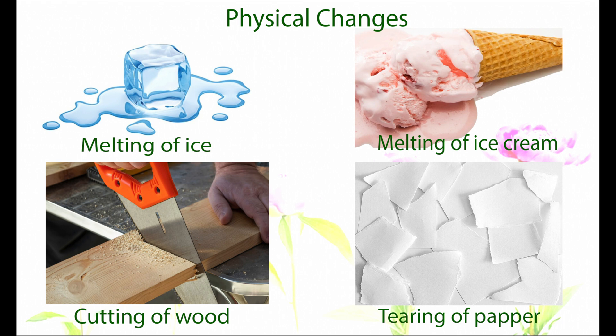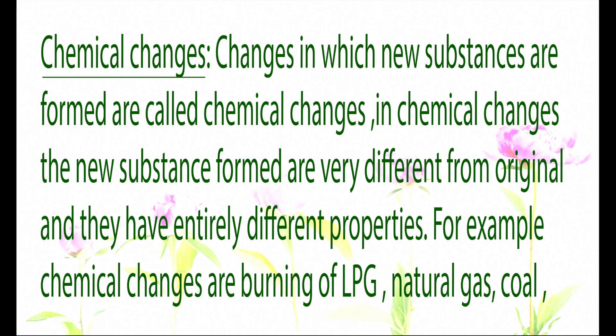If we tear a paper, we cannot get a whole paper again — so some physical changes can be reversed and some cannot. But the physical identity of the substance remains the same. Some examples of physical changes are melting of ice, melting of ice cream, tearing of paper, and cutting of wood.